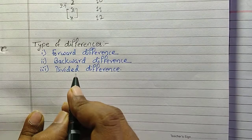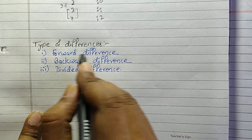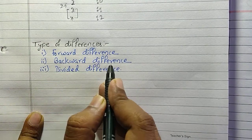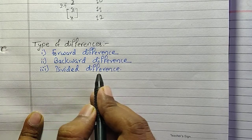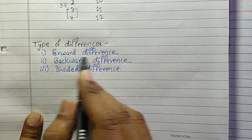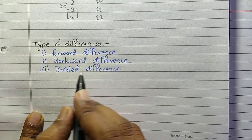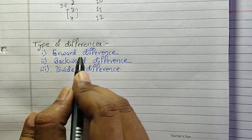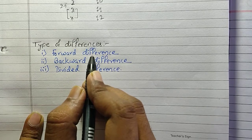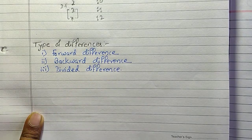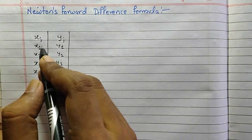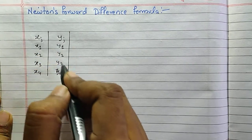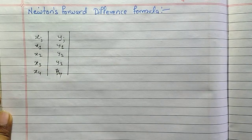There are three types of methods for finding the differences. The first one is the forward difference, the second one is the backward difference, and the third one is the divided difference. I will be adding videos about all three differences, but first I will be discussing about the forward difference and then Newton's Forward Difference Formula.